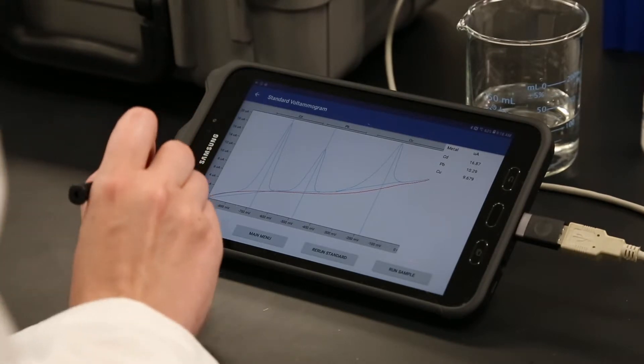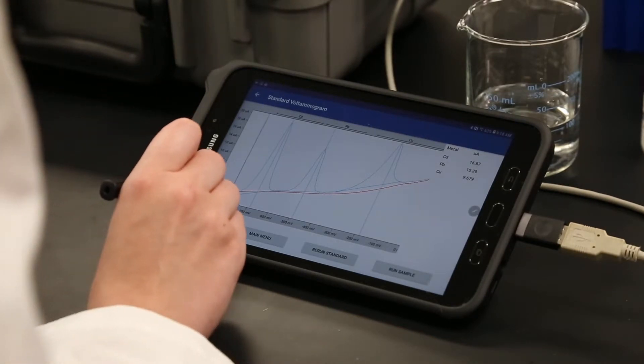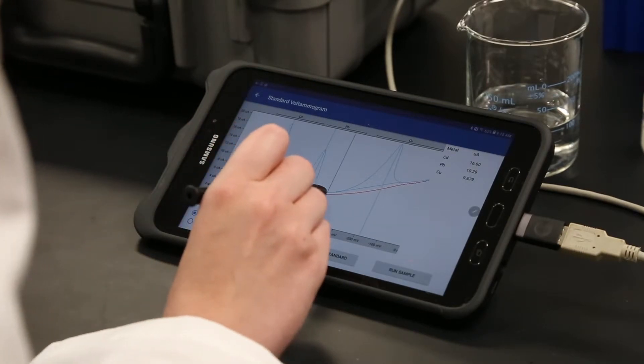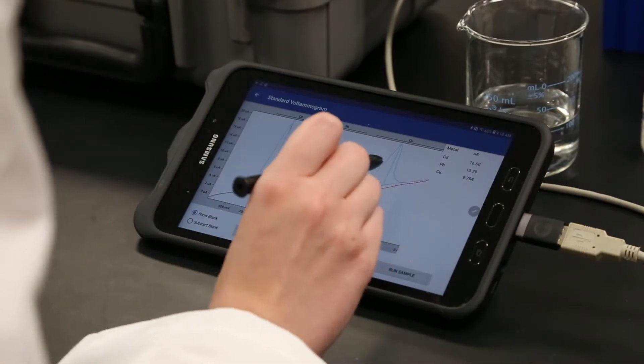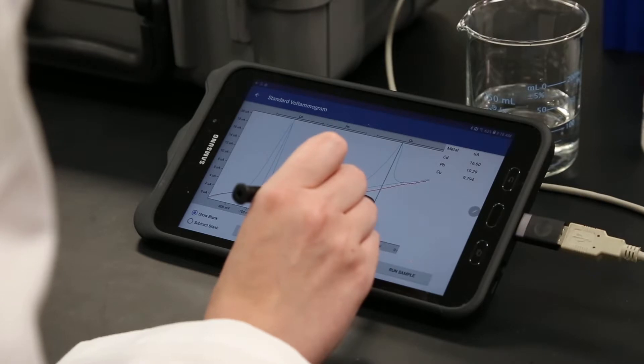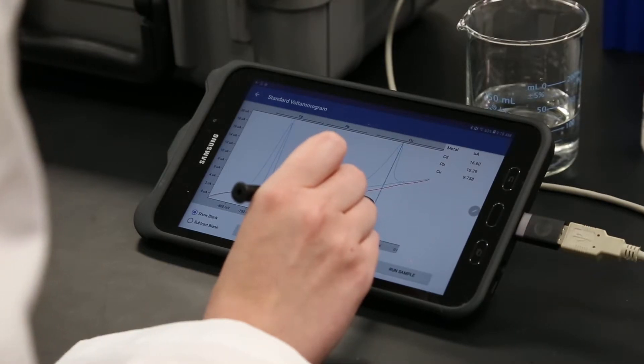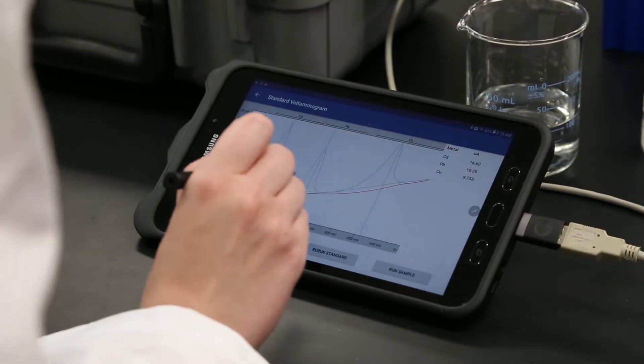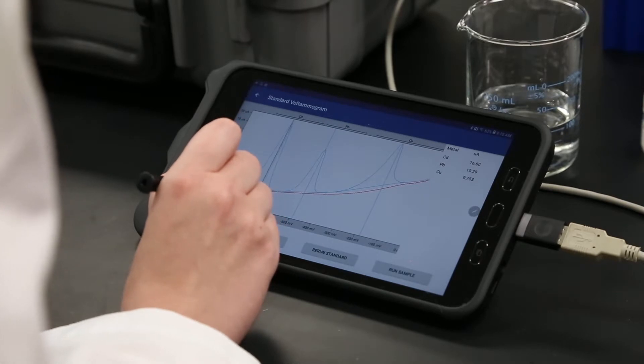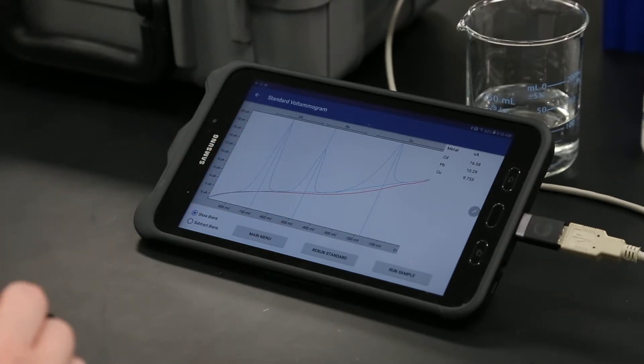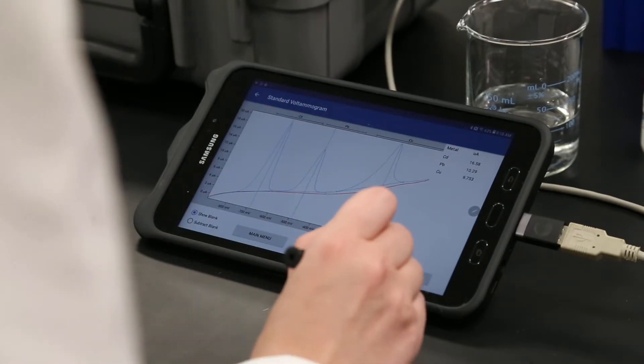At this point, the user has the option to adjust the metal window, peak center, and baseline by dragging them to the desired voltage. This is not usually necessary, but if it is not done at this time, there is no option to do it later and any changes will require analyzing another standard. Once a satisfactory standard is seen, click Run Sample to continue the analysis cycle.